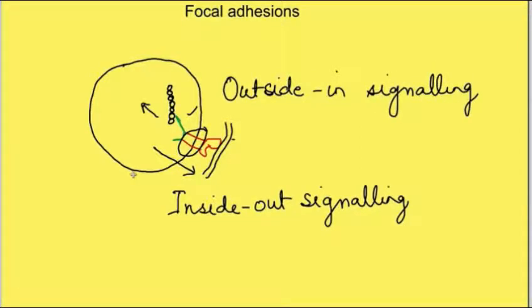This inside-out and outside-in signaling basically means cell and extracellular matrix are talking to each other. There is an active dialogue going on between the two.